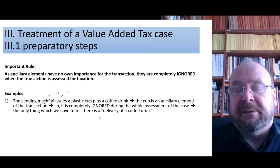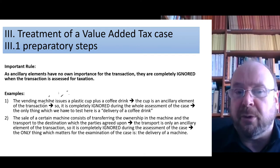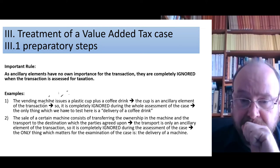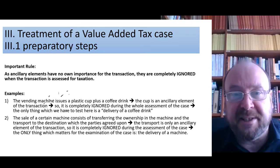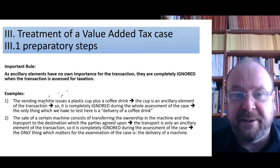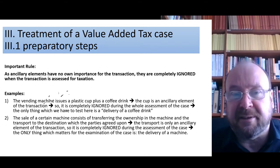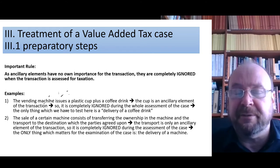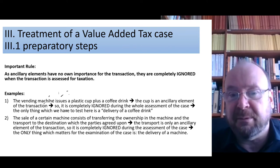The only thing which happens is the delivery of a drink of coffee or cappuccino, whatever you bought. Once you have found out that the sale of the machine consists of transferring the ownership and transport to the destination, and that the transport is only an ancillary element, you can completely eliminate and ignore the transport element, and concentrate only on the main element: selling a machine. So the only thing relevant for VAT purposes between the two parties is delivery of a machine. Transport can be forgotten completely.